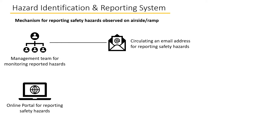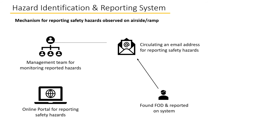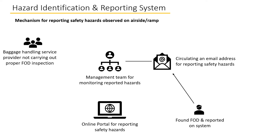Once reported, safety hazards can be coming from different departments. For example, a GPU operator may report that he found FOD on the apron comprising broken zips and luggage plastic pieces. When such an observation is reported on the system, it would be inferred that whichever agency or company is providing baggage handling services on the ramp is not implementing FOD inspection after operation. So the team behind the email address would take up the matter with that company to sort it out.